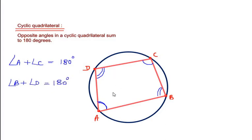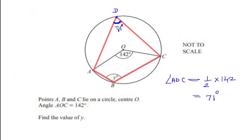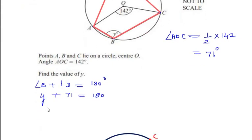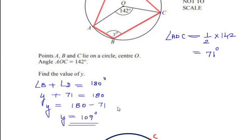Coming back to our problem, angle B and angle D are opposite angles of the cyclic quadrilateral, so angle B plus angle D equals 180 degrees. We have angle B as y degrees and angle D as 71 degrees, so y plus 71 equals 180, giving us angle y equals 180 minus 71, which is 109 degrees.